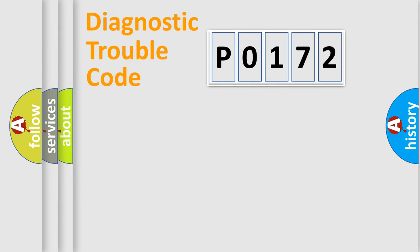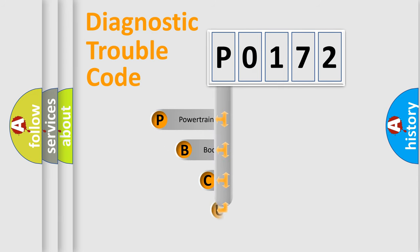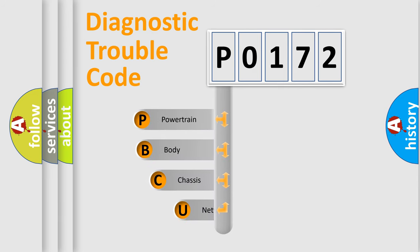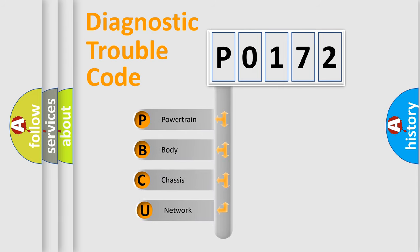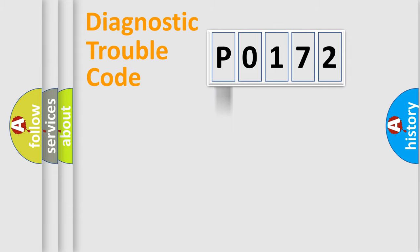Let's do this. First, let's look at the history of diagnostic fault code composition according to the OBD2 protocol, which is unified for all automakers since 2000. We divide the electric system of the automobile into four basic units: Powertrain, Body, Chassis, and Network.